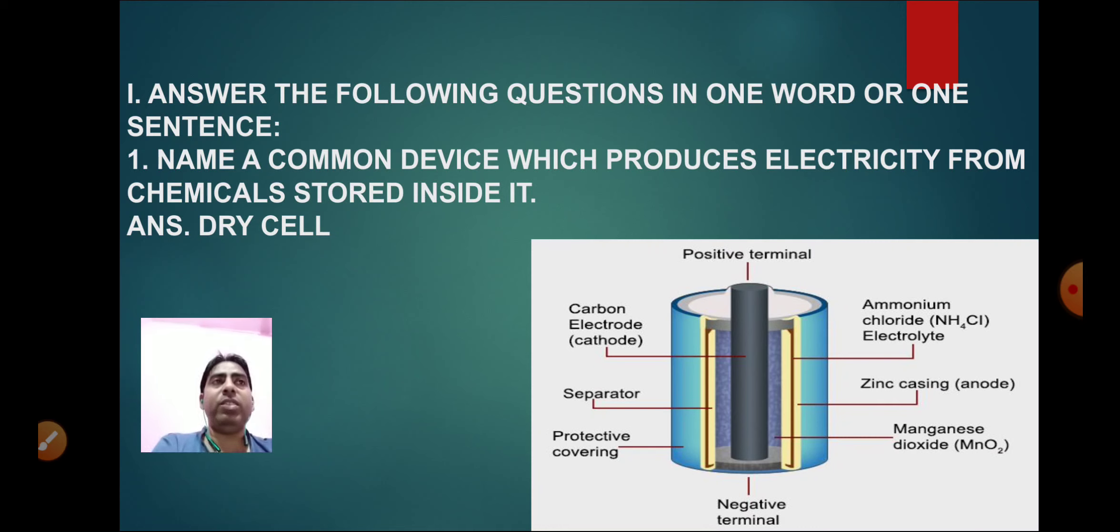The first question: Name a common device which produces electricity from the chemicals stored inside it. The answer is dry cell.